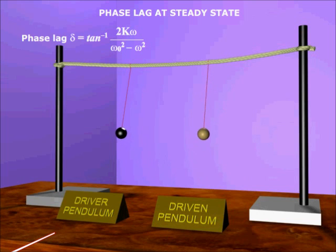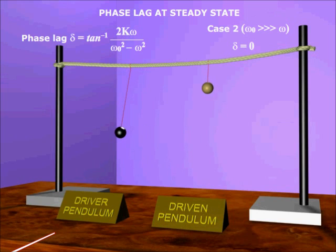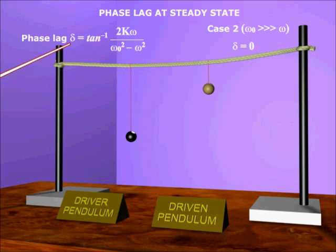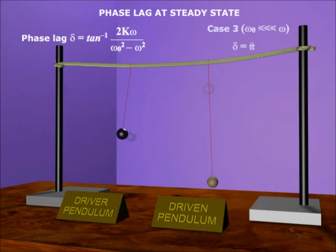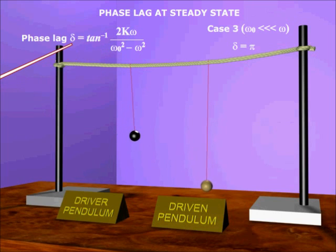Phase lag at steady state. Case 1: ω₀ equal to ω — the oscillating body lags behind by a quarter of a cycle relative to the driving force when steady state is reached. Case 2: ω₀ much greater than ω — for very small damping this term approaches zero from the positive side, so the phase angle can be taken as zero, meaning the oscillator oscillates in the same phase as the driving frequency at steady state. Case 3: ω₀ much less than ω — for small damping this term approaches zero from the negative side and the angle can be taken as π, meaning the oscillator lags half a cycle behind the driving frequency at steady state.